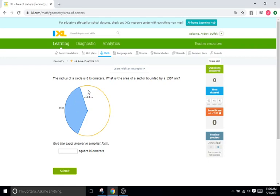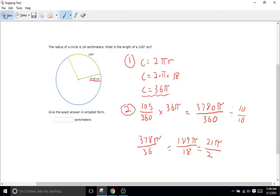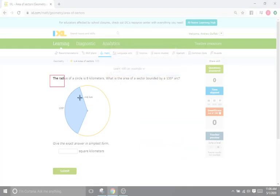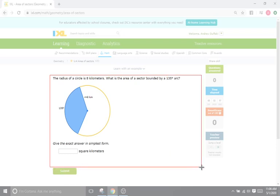So instead of finding the area of the entire circle, all the space on the inside of the circle, we're only going to be finding all of the space within this sector or this section of the circle. And the format is going to be pretty much the same as arc length.